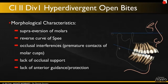The difference now is that some class two div one hyperdivergent patients come with an open bite — a super-eruption of molars. Not only do I have to intrude the upper arch, but I also have to intrude the lower molars to close that bite. They have a reverse curve of Spee, occlusal interferences, and lack of occlusal support. But if you follow this protocol, you can treat the vertical axis height of all these patients regardless of their malocclusion.